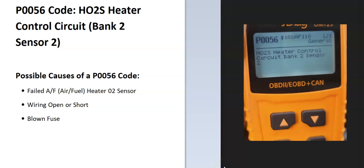Today I'm talking about a P0056 code, what it is and how you go about fixing it. So what is a P0056 code? Well it's an HO2S heater control circuit bank 2 sensor 2. And what does this mean?